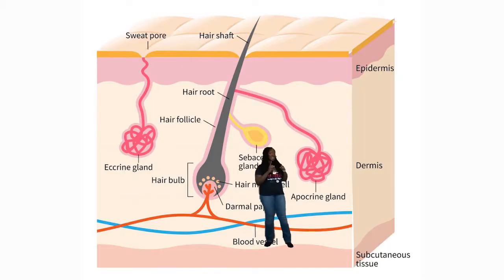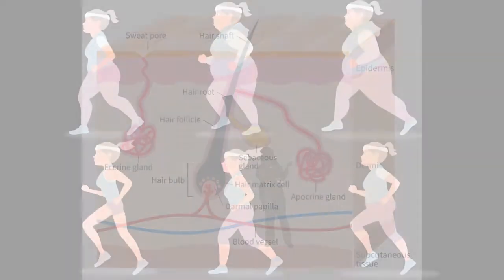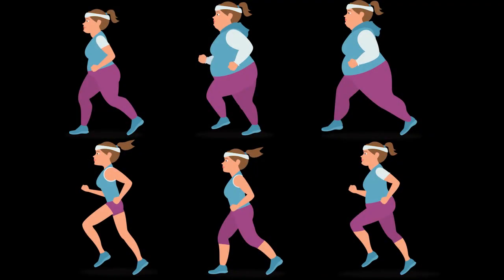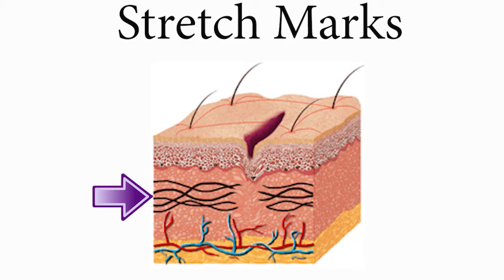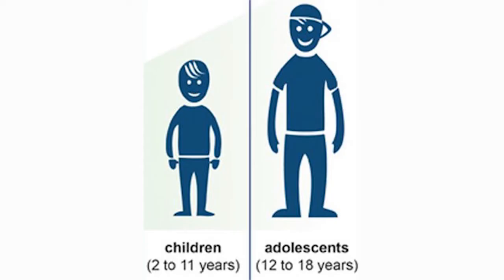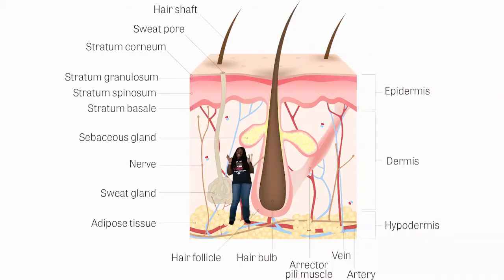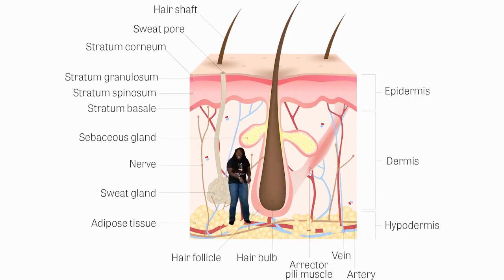Apocrine sweat glands are sweat glands that are attached directly to the hair follicle. Speaking of working out: if you gain or lose a significant amount of weight, stretch marks — which are small tears in the elastic fibers of the dermis — can occur. Stretch marks can also occur during a teenage growth spurt or pregnancy. Next we have the hair bulb, which forms the base of the hair follicle. The hair follicle anchors each individual hair into the skin, and the hair bulb has blood vessels that nourish the living cells that grow and divide to build the hair shaft.